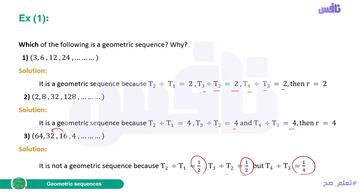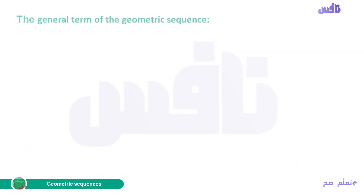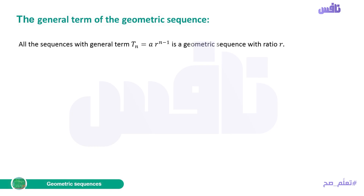Let's look at the general term of a geometric sequence. The general term is Tn = A · R^(n−1), which is a geometric sequence with ratio R. R is the multiplier that occurs every time.